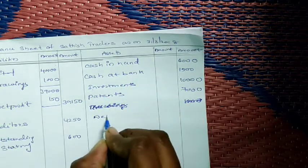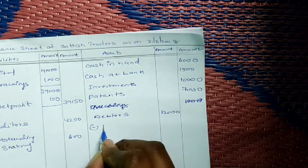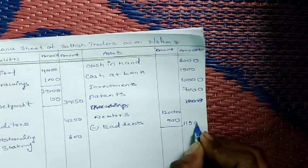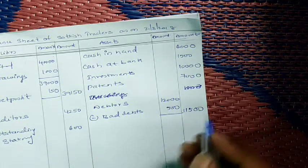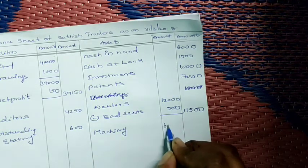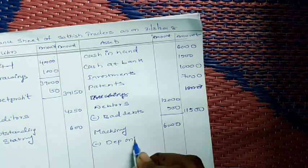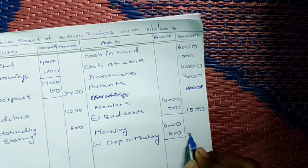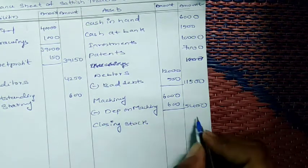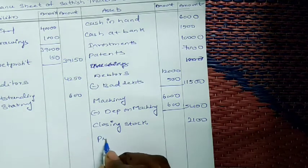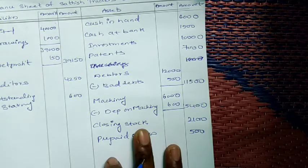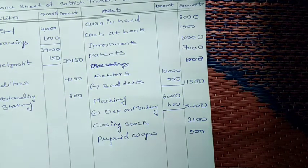Drawings we should not take in assets - already deducted in liabilities side. Debtors: 12,000 minus bad debts 500 equals 11,500. Machinery: 6,000 minus depreciation 600 equals 5,400. From adjustments: closing stock 2,100 and prepaid wages 500 are taken in balance sheet asset side. Now all items related to the balance sheet have been taken.